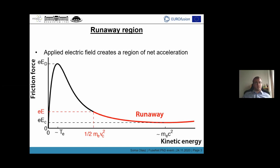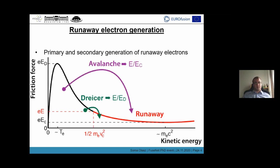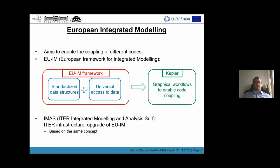One of the main methods for runaway electron generation is the Dreicer generation rate. This essentially means that the thermal electrons diffuse over this critical boundary in velocity space into the runaway region. Another generation method is the avalanche generation, where runaway electrons collide with thermal particles, giving enough energy to both of them to end up in the runaway region.